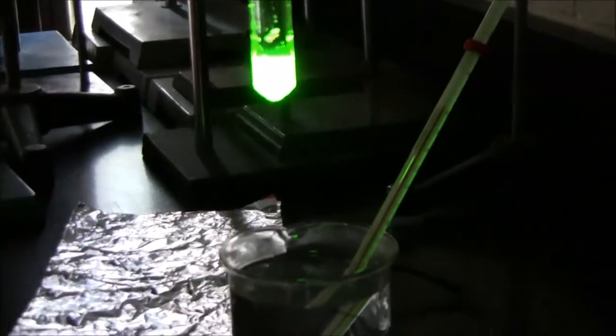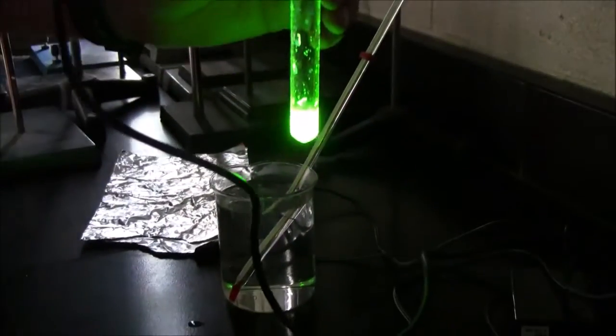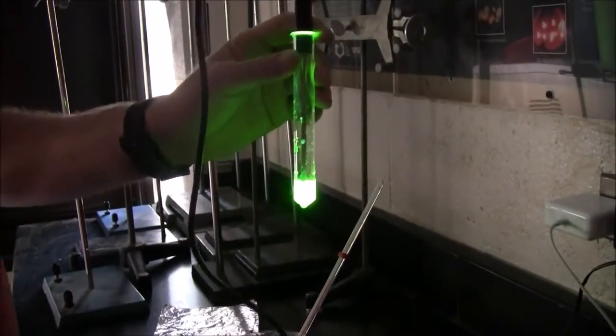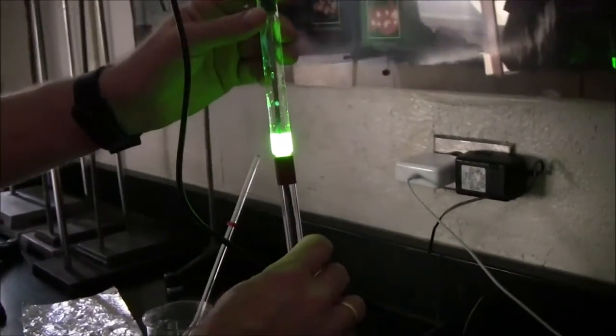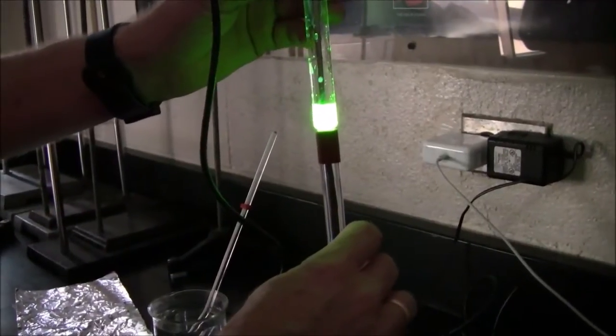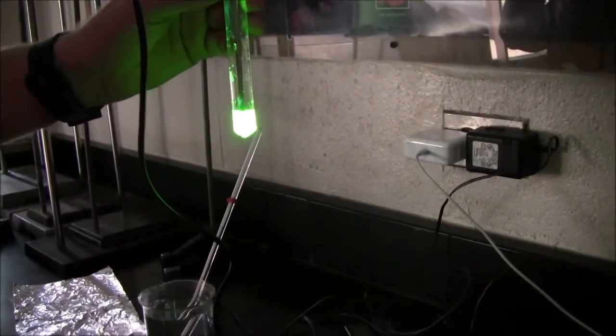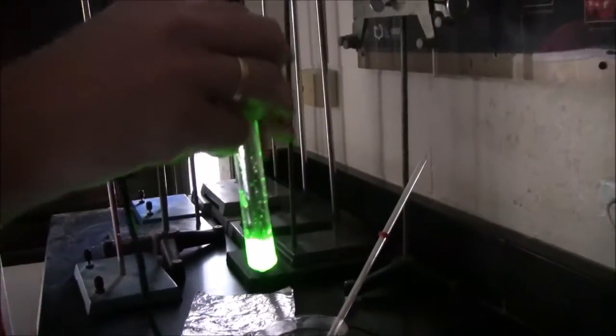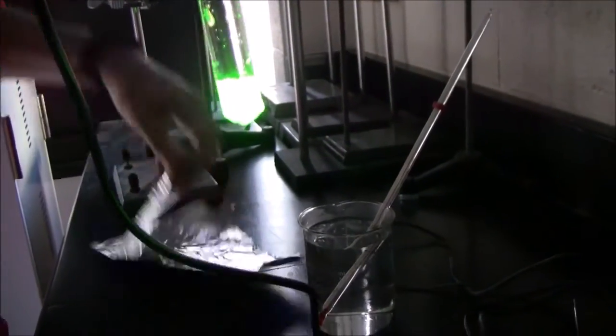So what I want to do now is I want to measure the temperature of the solution and measure how much light is coming off with the light probe. But obviously there's light in the room. So in order to just have light from the glow stick into the probe and not the ambient light, I'm going to try and wrap it up in tin foil.